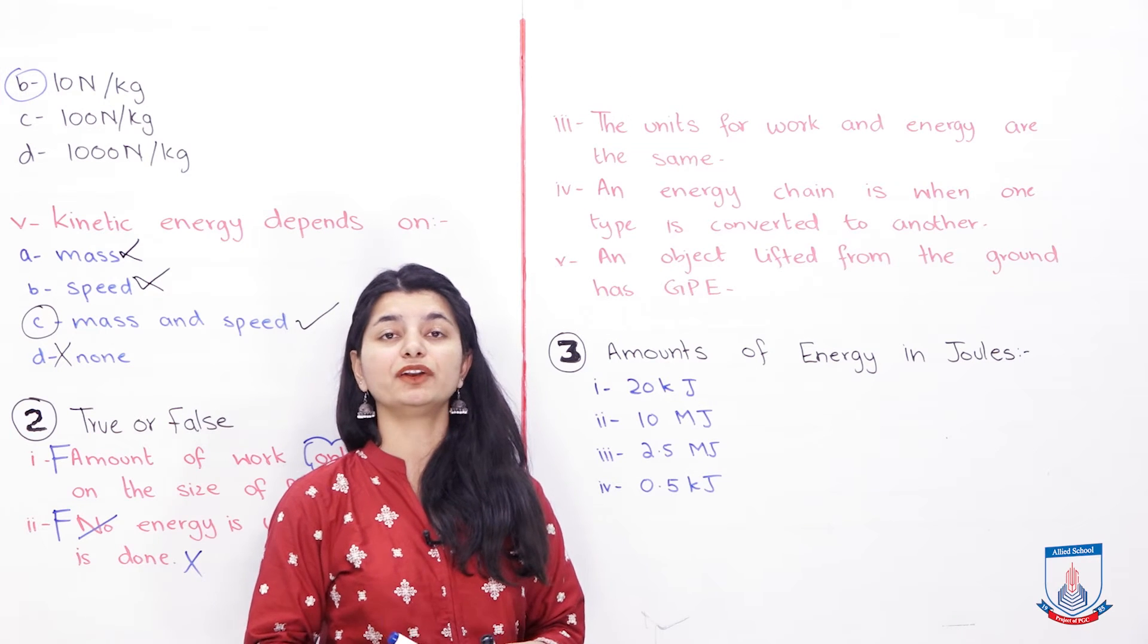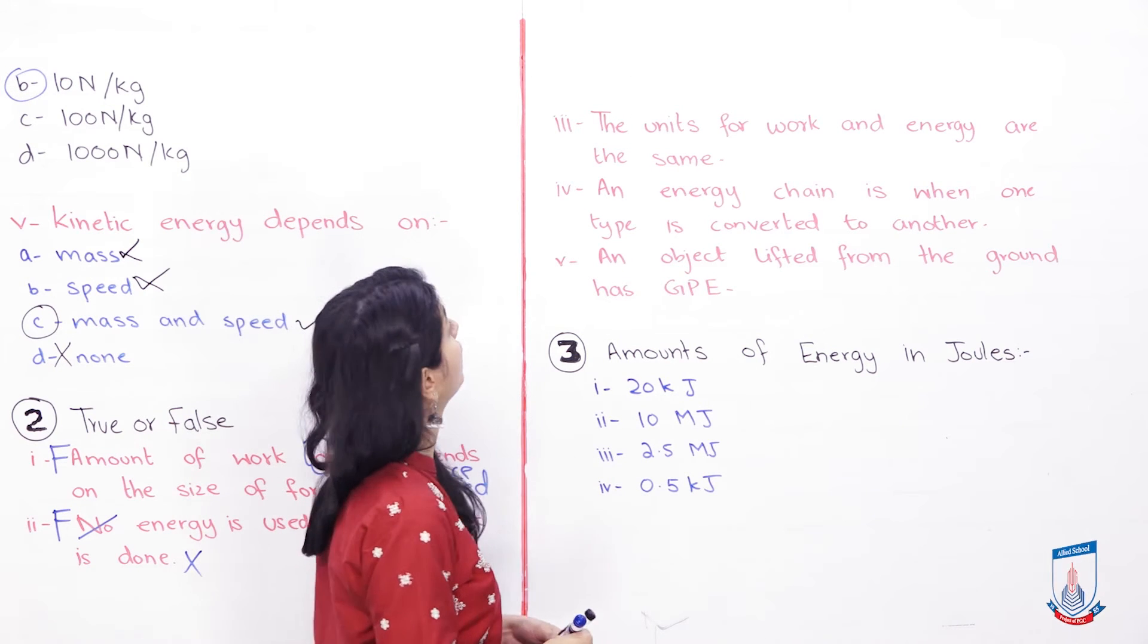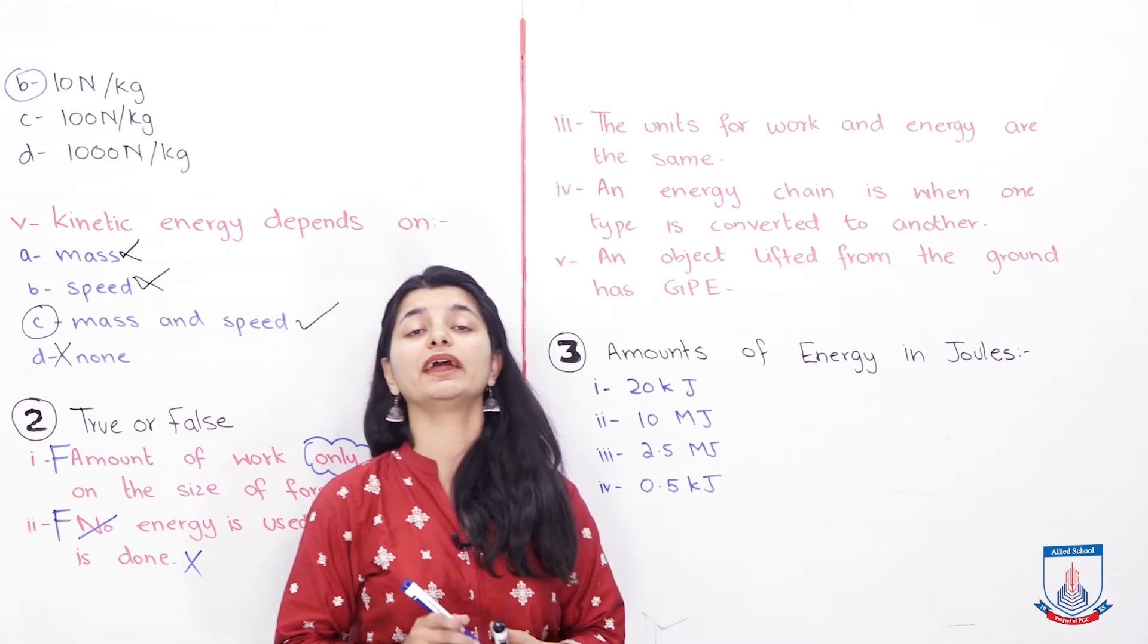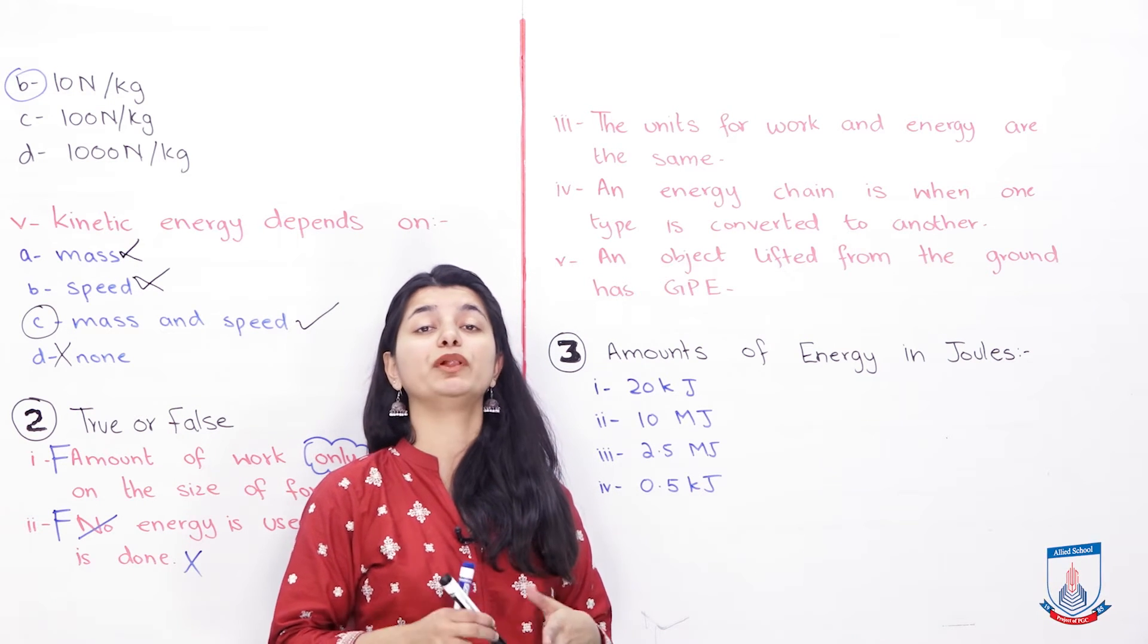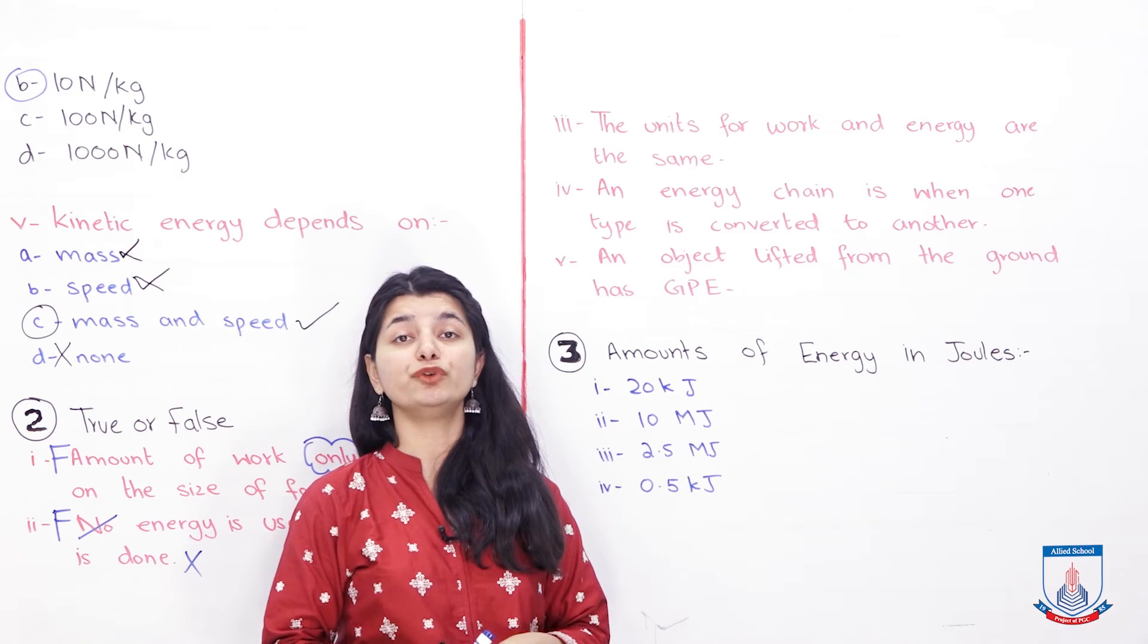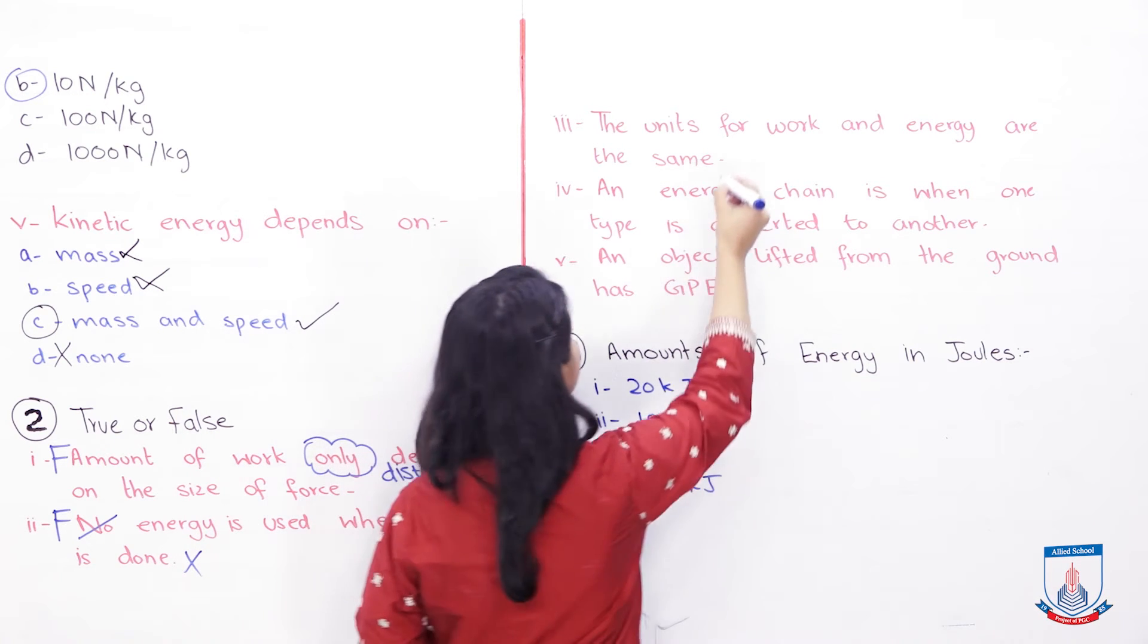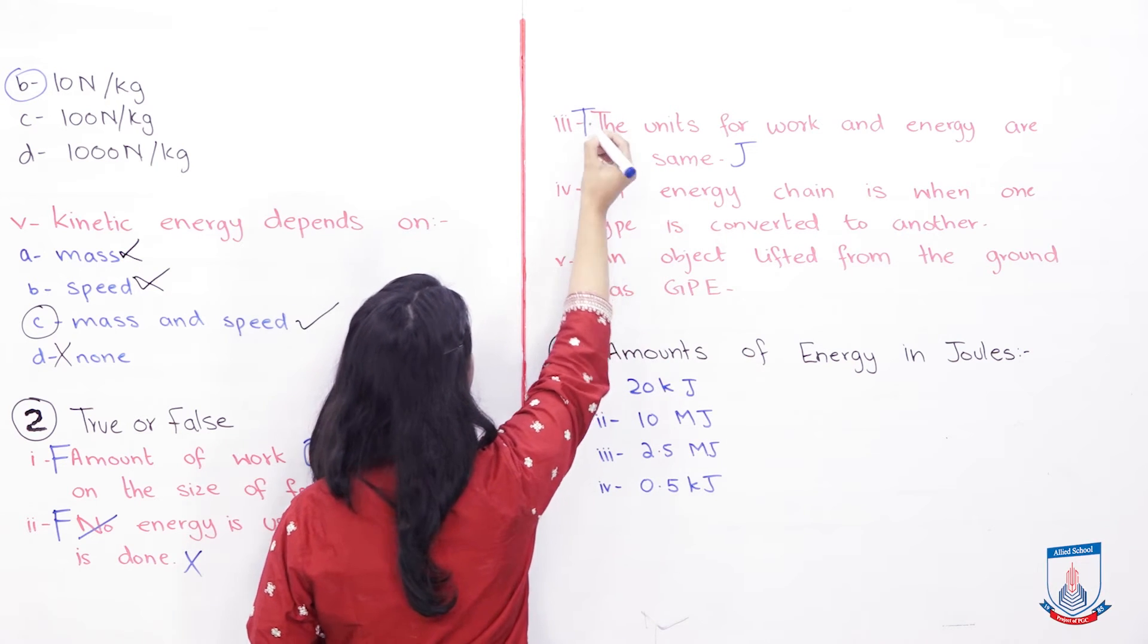Let's see the third true and false option. Now what is the next question? The units for work and energy are the same. So they are saying, is the unit of work and energy for measurement right? Is it the same? And that is true. What is the unit of both? It's joules. And that's why, third one is true.